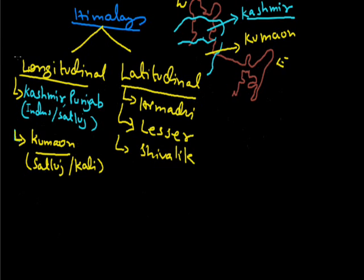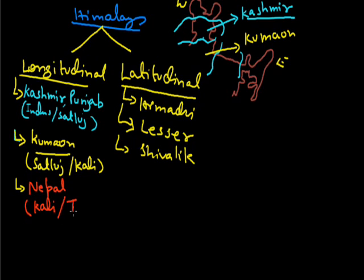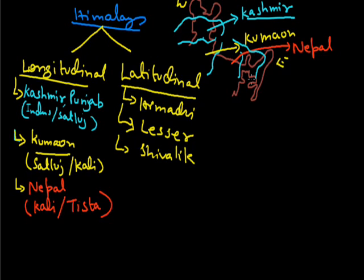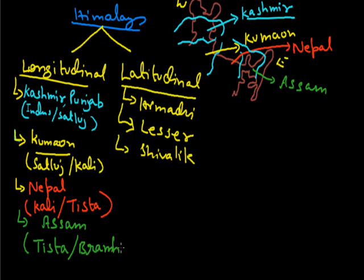The Kumaon Himalaya covers the state of Uttarakhand of India. The next division of Himalaya is in between river Kali and river Tista, and this Himalaya is called the Nepal Himalaya — the country Nepal comes in this division. The fourth division of Himalaya is in between river Tista and river Brahmaputra, and this is called the Assam Himalaya.